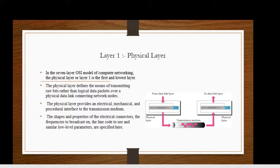Layer 1, the physical layer. In the seven layer OSI model of computer networking, the physical layer or layer 1 is the first and lowest layer. It defines the means of transmitting raw bits rather than logical data packets over physical link connecting network nodes.